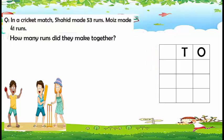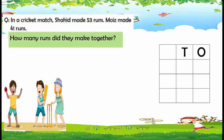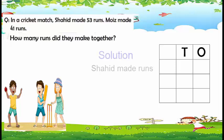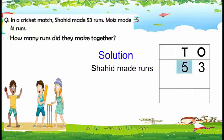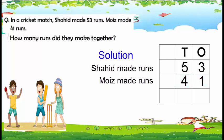Step number four: write the solution. To solve this problem we first write proper statements. Shahid made 53 runs — we write 3 in the ones column and 5 in the tens column. Moise made 41 runs — we write 1 in the ones column and 4 in the tens column. The question asks how many runs did they make together, which means we have to add.